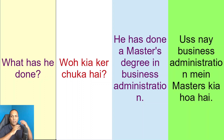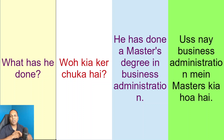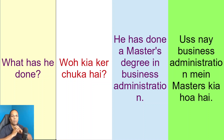Ya pher he hasn't done anything — usne abhi tak kuch kia nahi hai. He is a fresh graduate — wo taza taza graduate hoa hai, taza taza pass hoa hai.